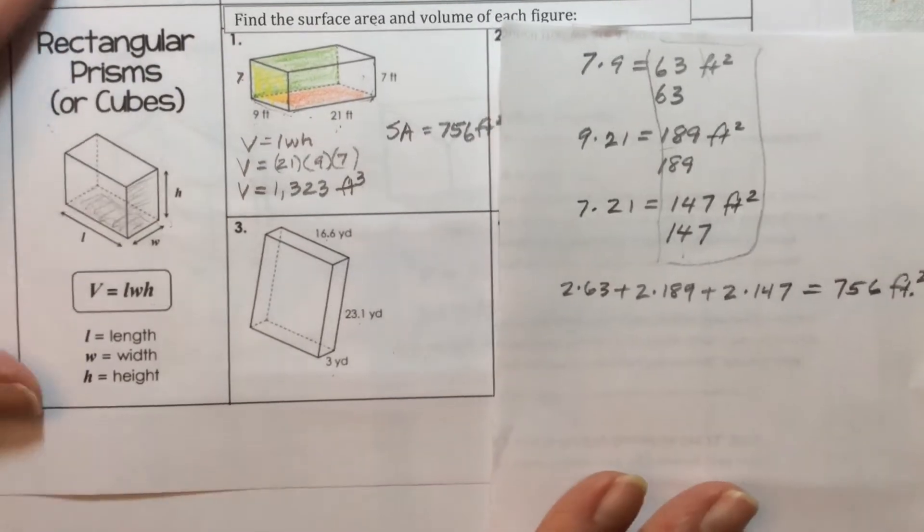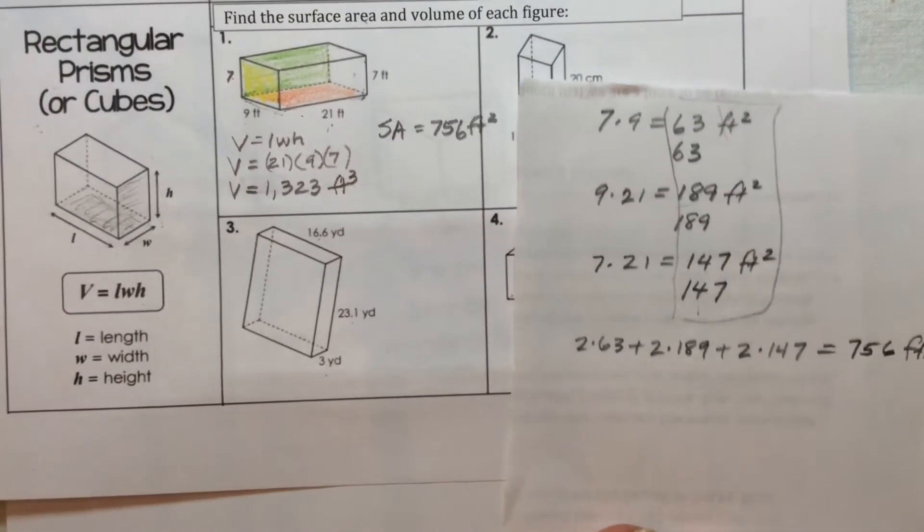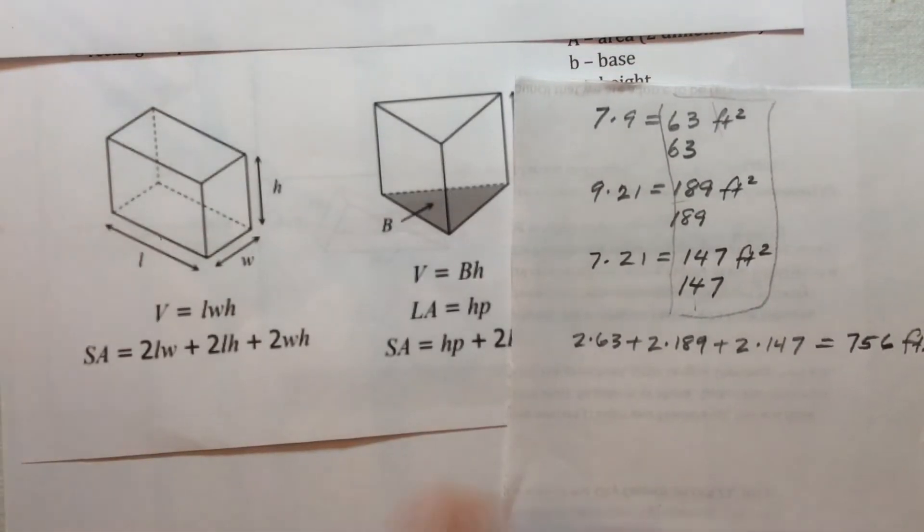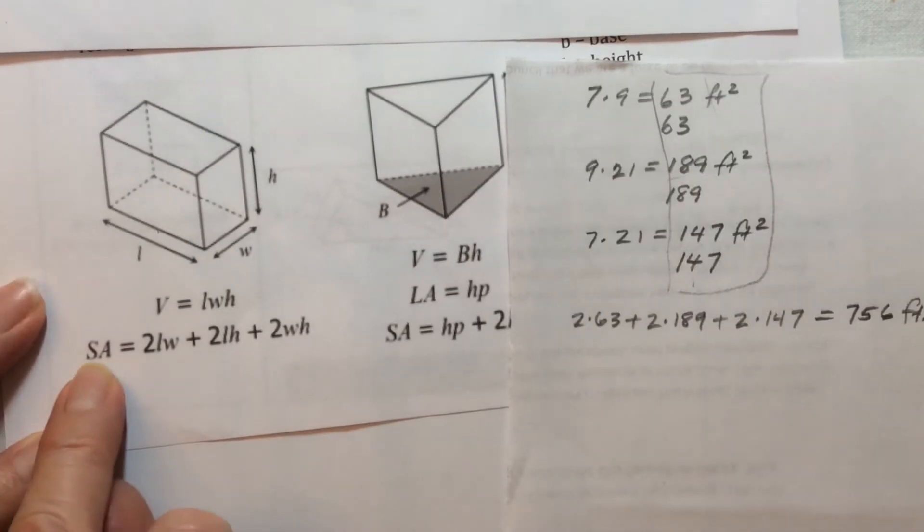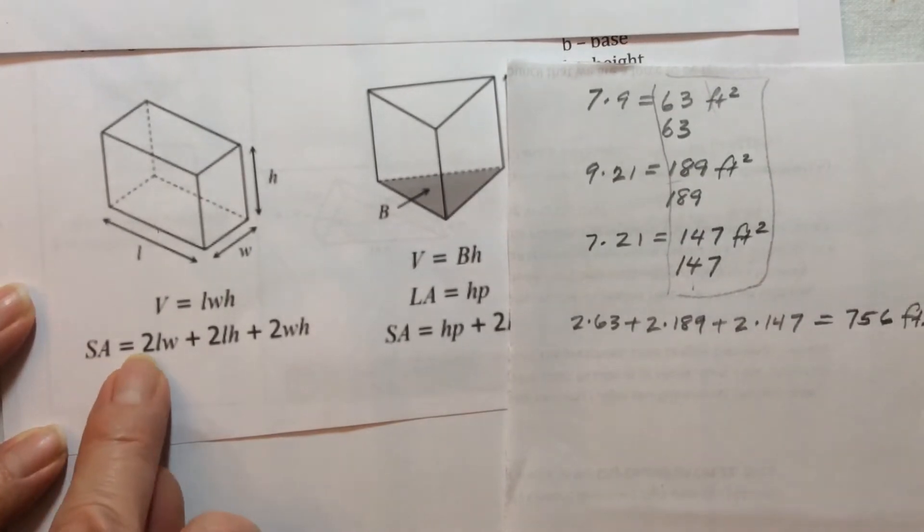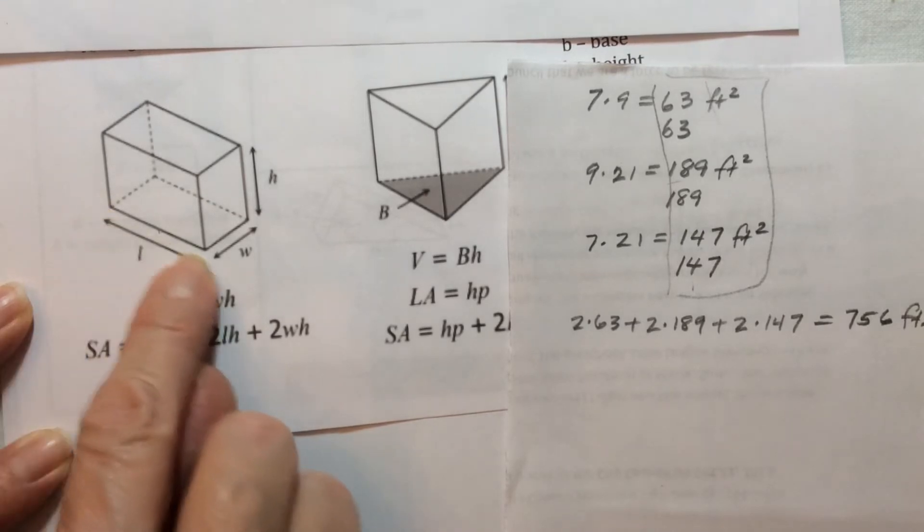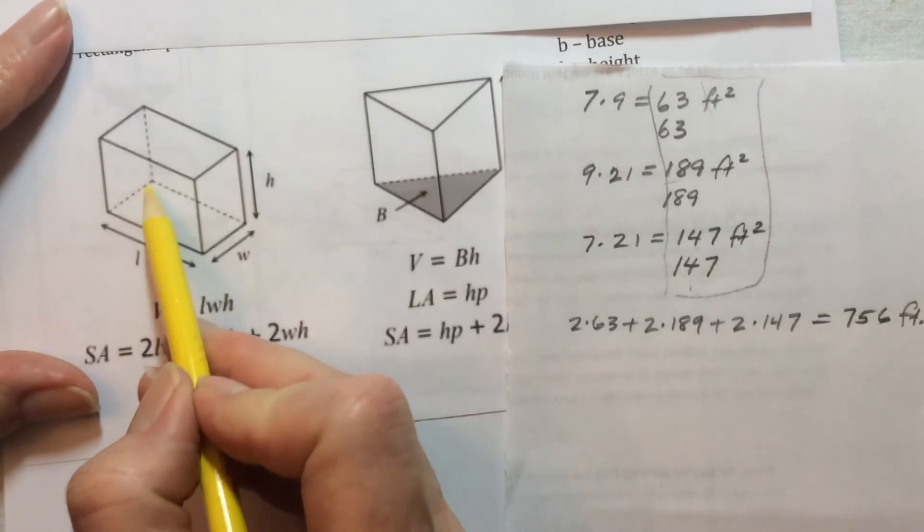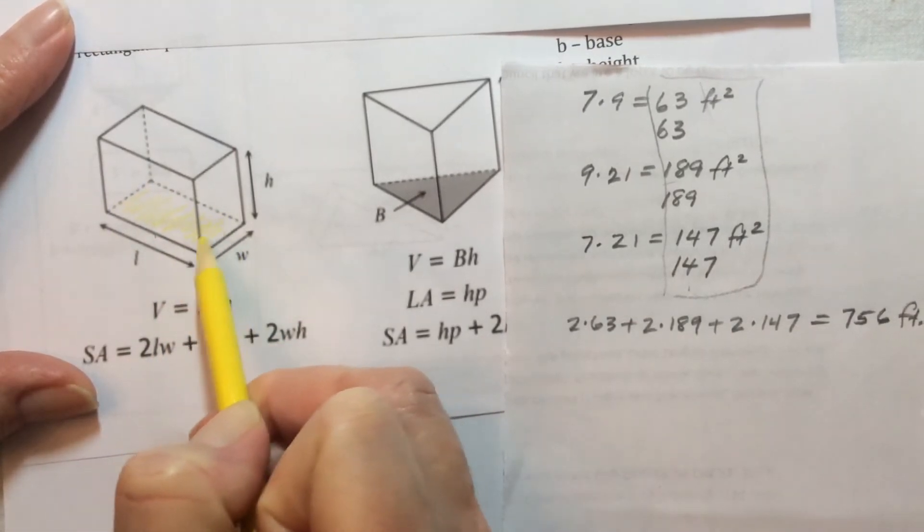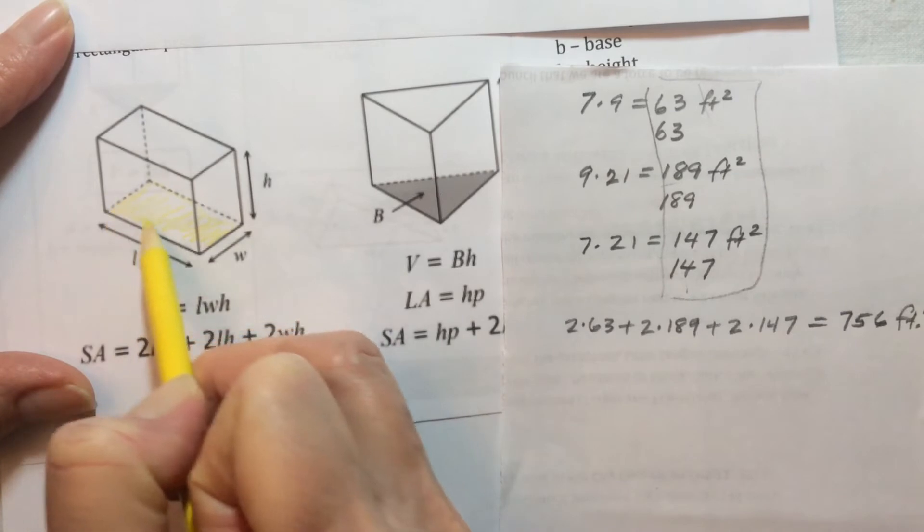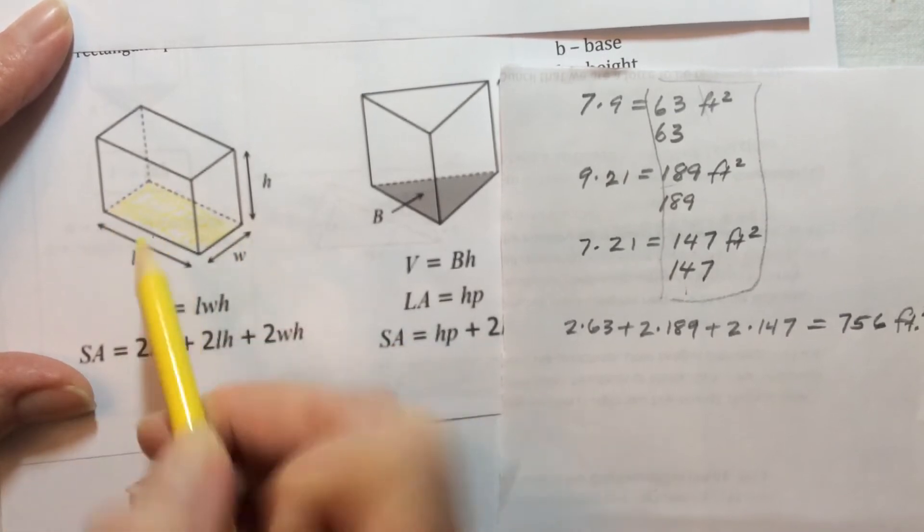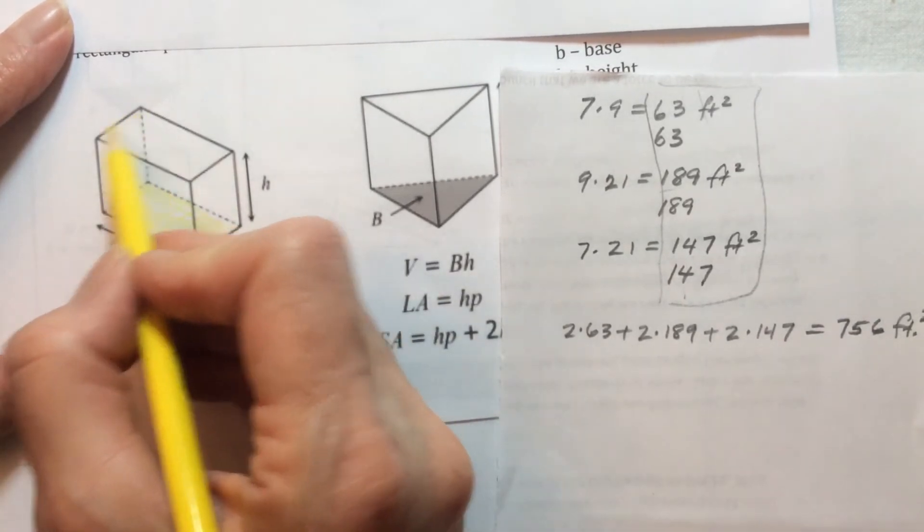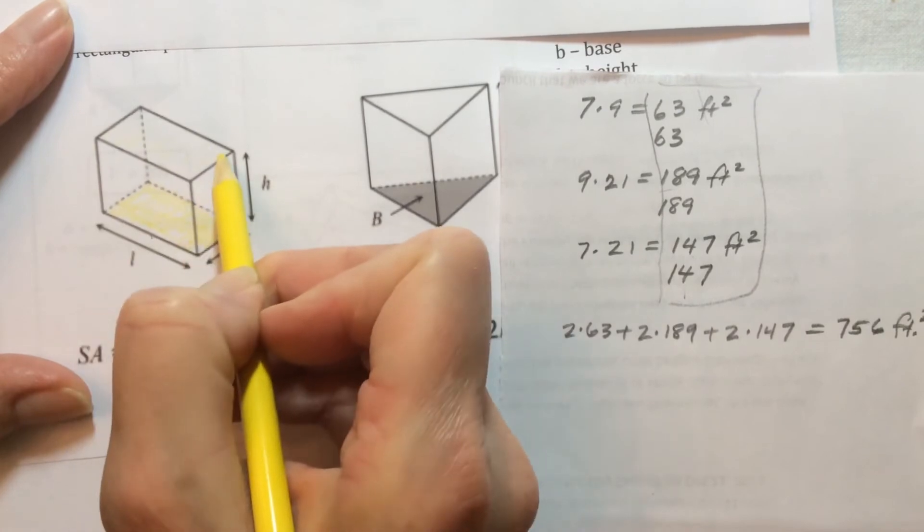So that is actually expressed on this page by saying the surface area is equal to 2 times the length times the width. So in other words, we're looking at this face right here, and it's 2 times that because we know we have another one up here.